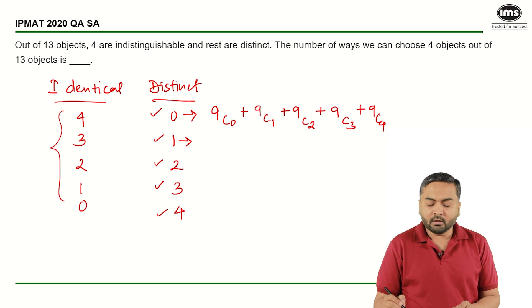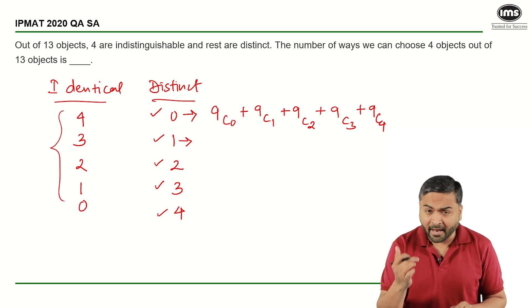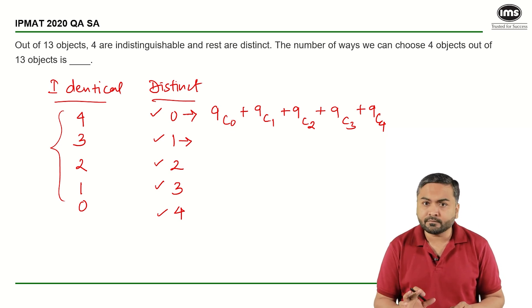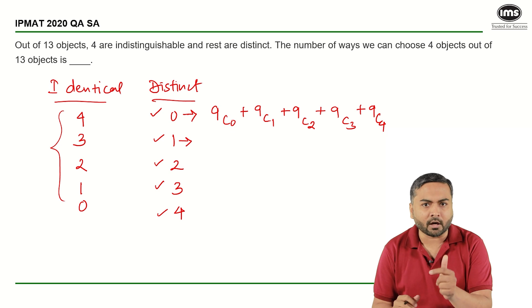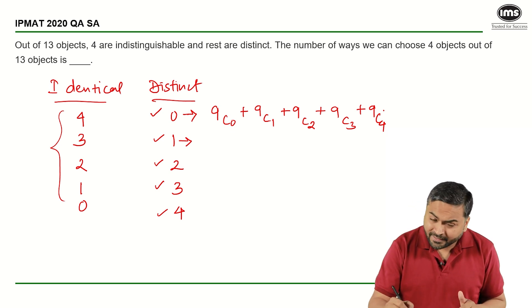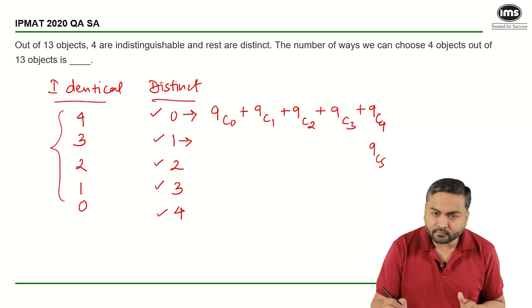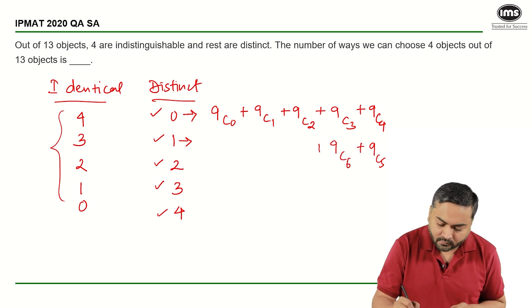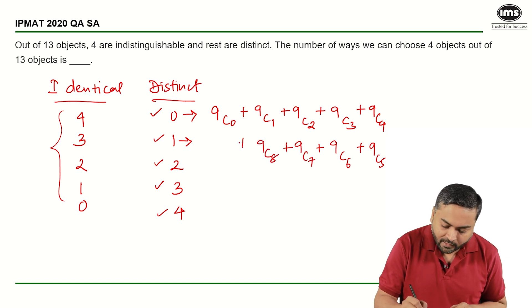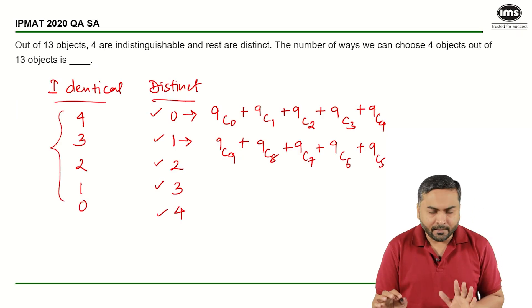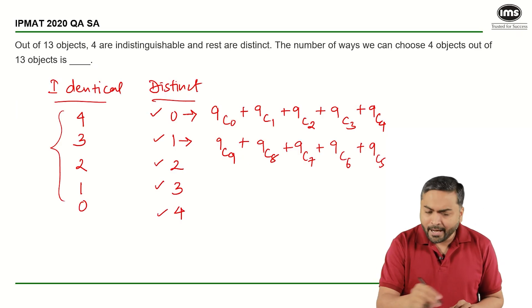Adding all of them. Now one way is you calculate manually the value for each one of them, or use the smart cut. Can I say that 9C4 is equal to 9C5? Similarly, 9C3 is equal to 9C6, 9C2 is equal to 9C7, 9C1 is equal to 9C8, and 9C0 is equal to 9C9. Right? Now if you add all of them...